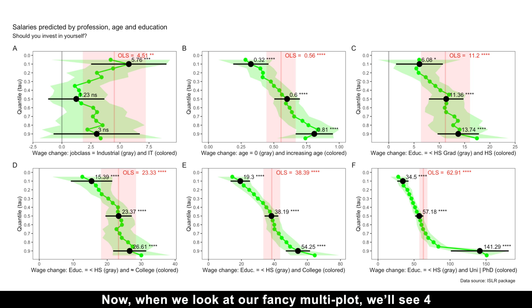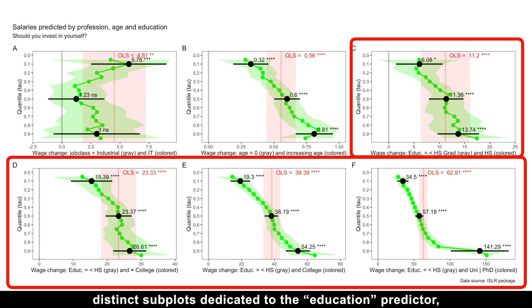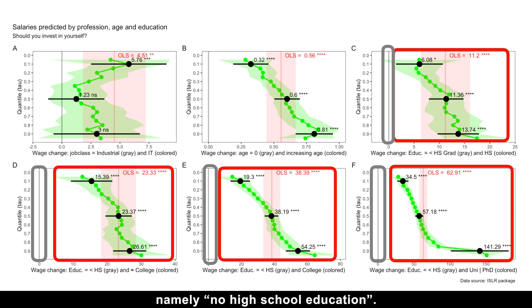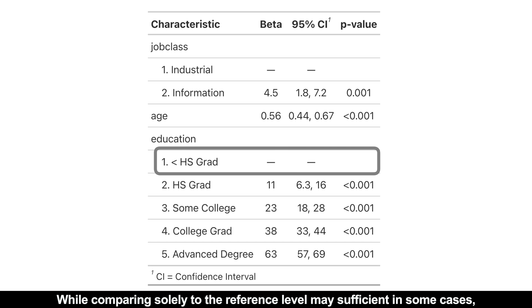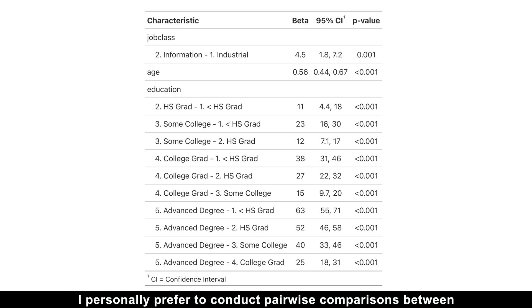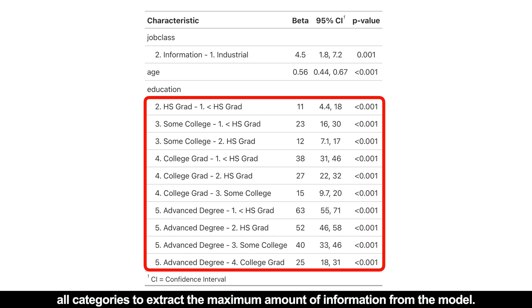Now, when we look at our fancy multiplot, we'll see four distinct subplots dedicated to the education predictor, each comparing a unique education category to the reference level, namely no high school education. While comparing solely to the reference level may be sufficient in some cases, I personally prefer to conduct pairwise comparisons between all categories to extract the maximum amount of information from the model.